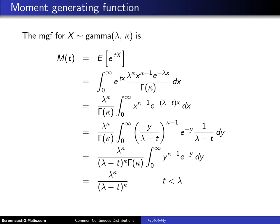Here is the derivation for the moment generating function of a random variable x that has the gamma distribution with scale parameter lambda and shape parameter kappa. The moment generating function for any random variable is the expected value of e to the tx by definition.